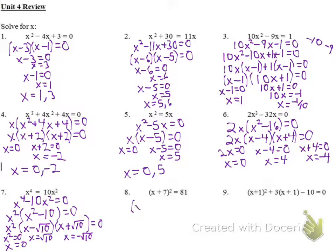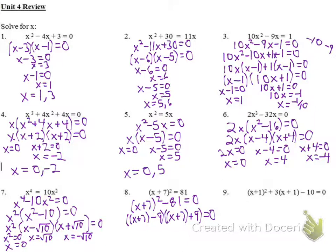Number eight, get everything to the same side: x plus 7 squared minus 81. I'm not going to multiply out x plus 7 squared — I'll treat it as a single term. It's a difference of two squares: that term squared minus 9 squared. So it becomes x plus 7 minus 9, times x plus 7 plus 9, giving x minus 2 and x plus 16. My two solutions are 2 and negative 16.